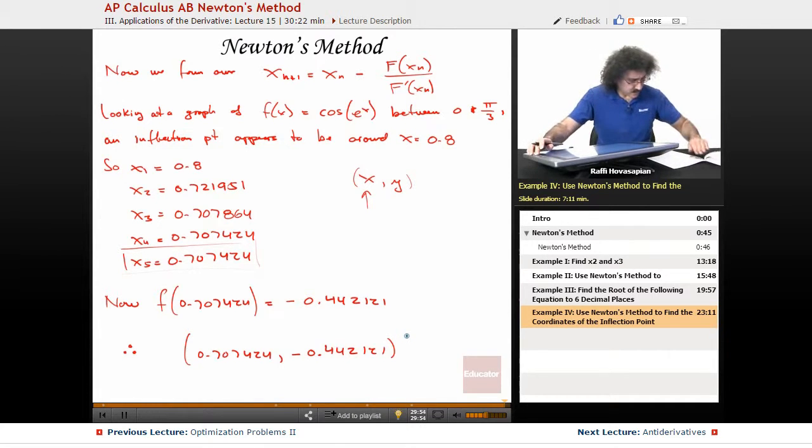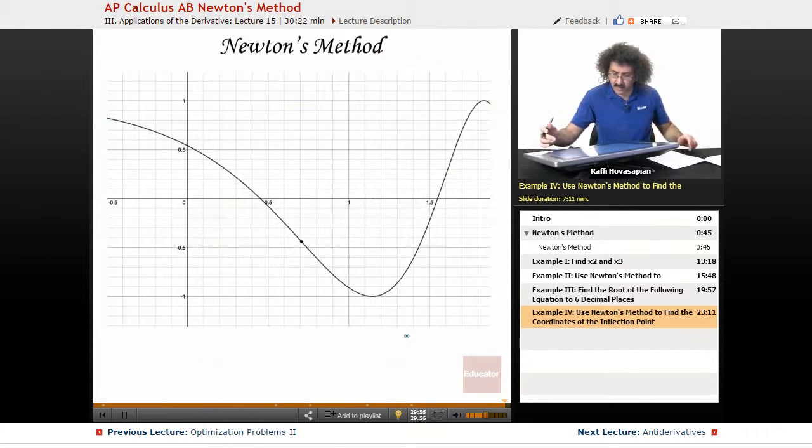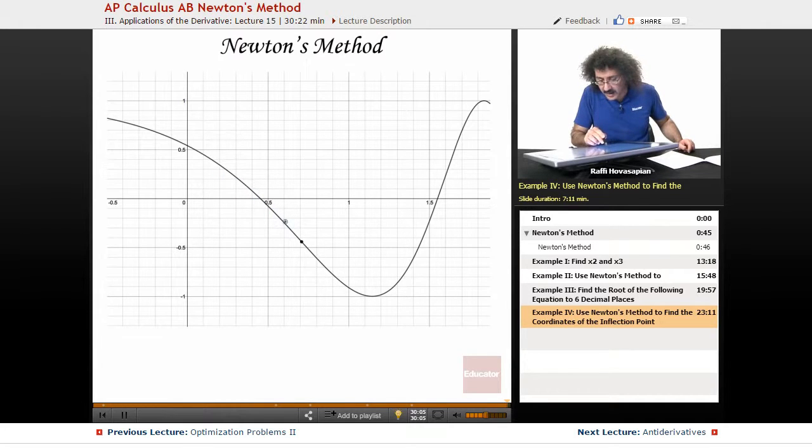Let's see what a graph of this looks like. Here's the graph, between 0, pi over 6, roughly. Here, an inflection point, concave down, and it looks like here, concave up. There's your point. 0.707 minus 0.4, whatever.